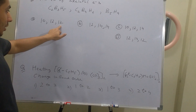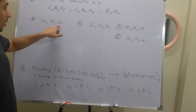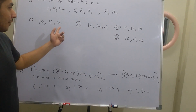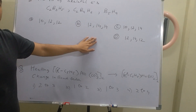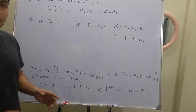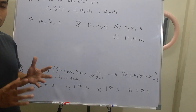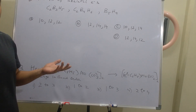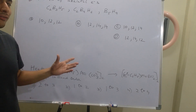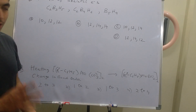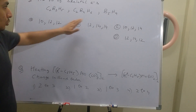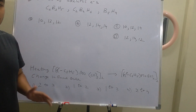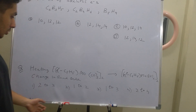The third compound B5H9 is the easiest to calculate. The options show 12, 14, 14, 12 — so if you calculate B5H9 first, you can eliminate two of the options right away. This is the method of elimination. Don't get overexcited; sometimes students start solving the full question and waste a lot of time. You have to be smart — solving just the third one can eliminate two options immediately.